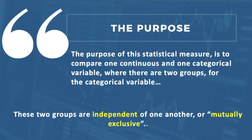In this particular example, males and females would represent gender, and SAT would represent the continuous variable. To recap, our continuous variable has some kind of numerical value associated with it, and our categorical variable is the variable in which we can place people or things into a certain category — in this case, gender. Our categorical variable has two groups: male and female. These two groups are independent of one another, or mutually exclusive.